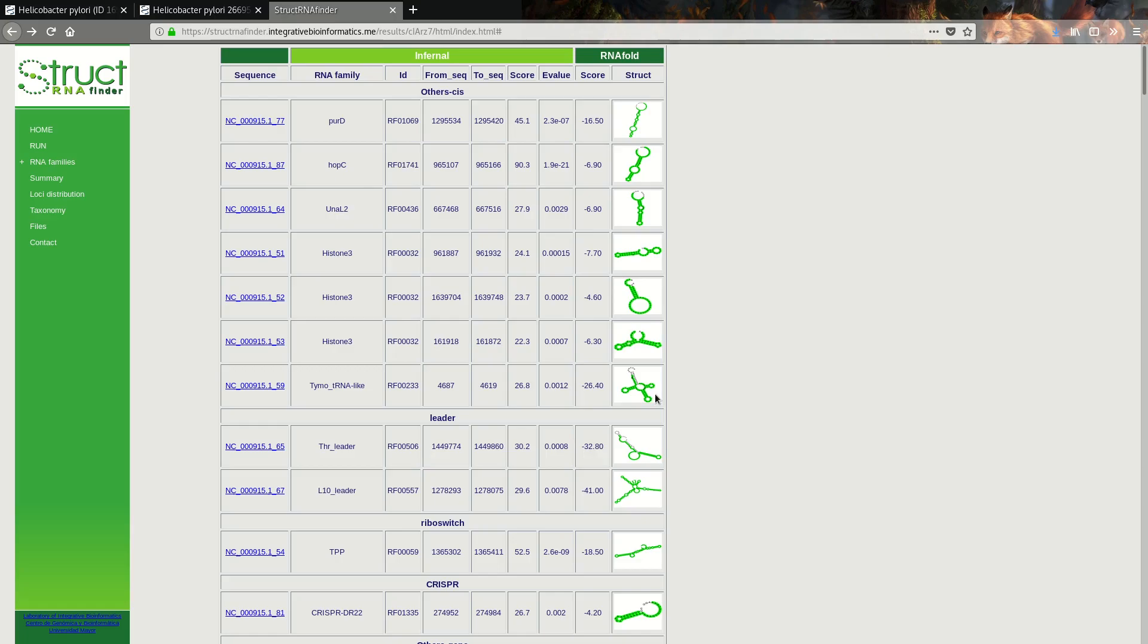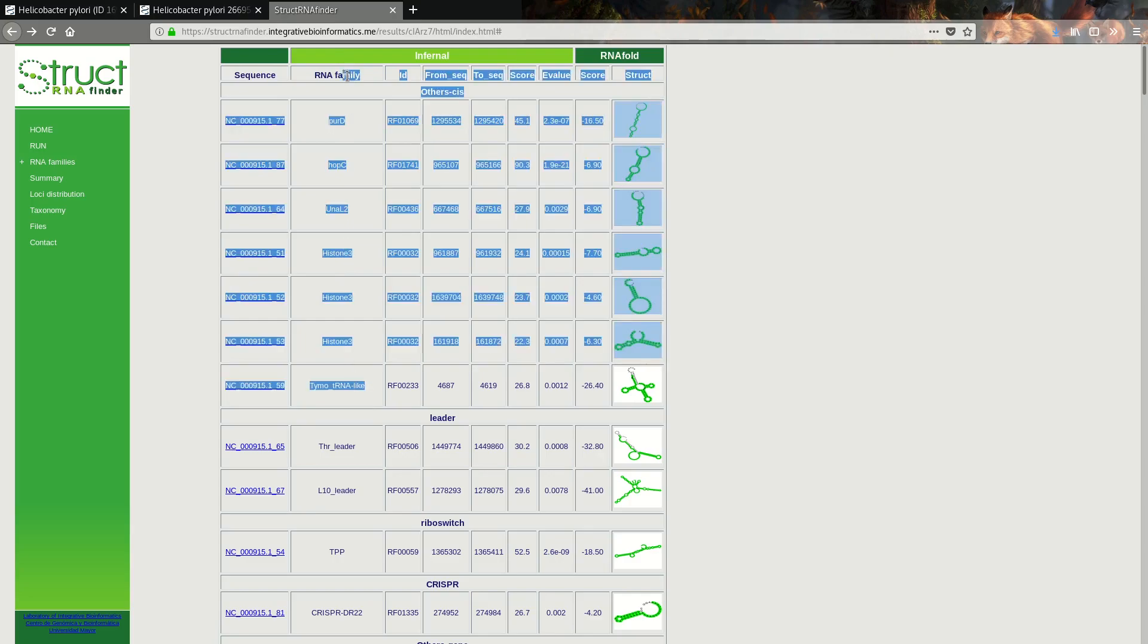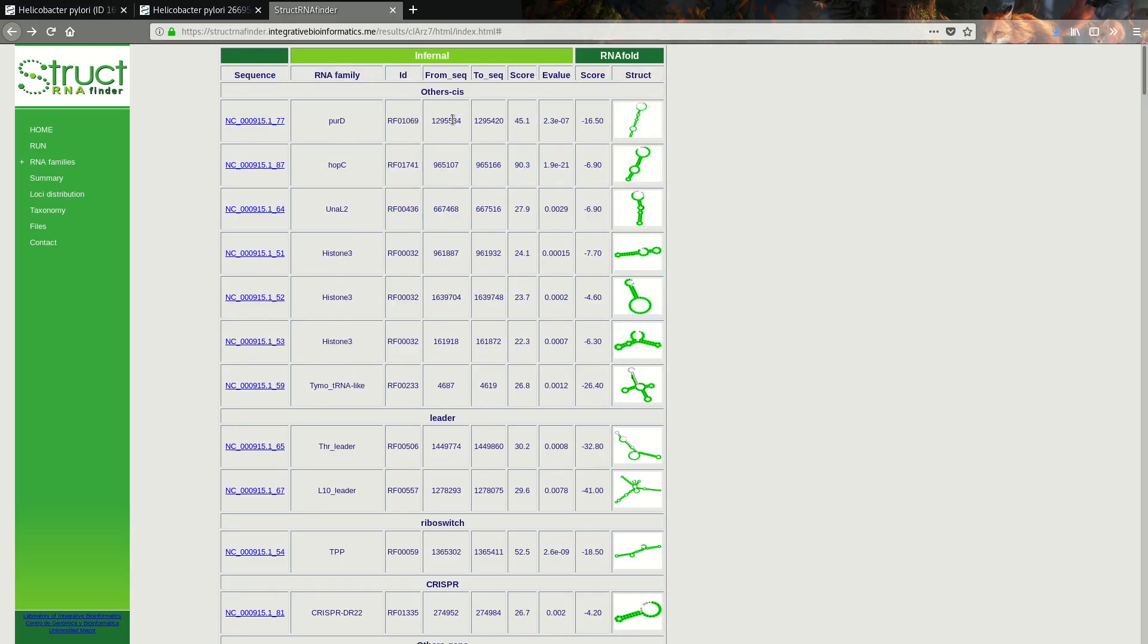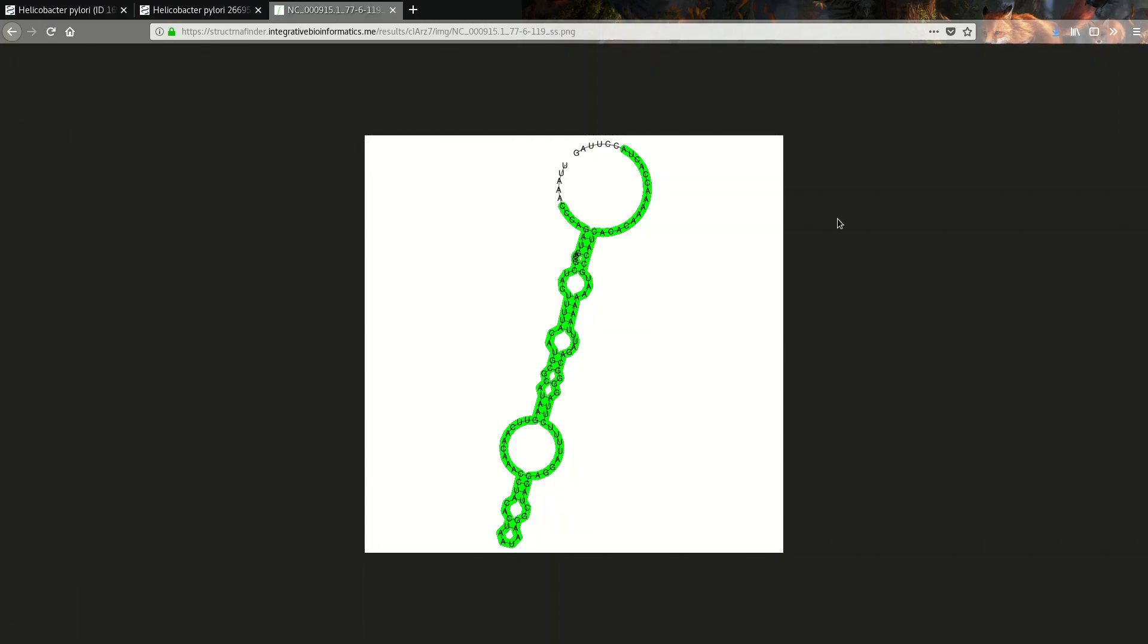After waiting for a very long time, we finally get our results. Inferno stands for the algorithm used to align sequences. We can see all sequences found in our submitted sequence, the family it belongs to, the family ID, from which sequence to what sequence the structure is found, the score, the E-value showing how likely it was random chance, and another score for the fold. We also have the RNA structure. We can click on it to see an image of how this RNA sequence would look and the alignment.